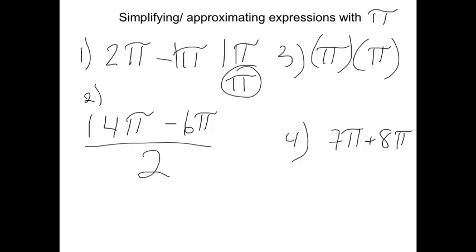For 14π - 6π, you would follow order of operations. So you would do the top or the bottom first because that would be the parentheses step. 14π - 6π would give me 8π. 8π divided by 2 would be the same as 4π because I would divide 8 by 2 and get 4, then just keep the pi there.